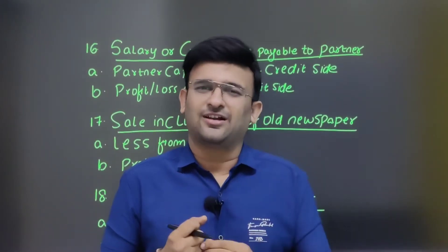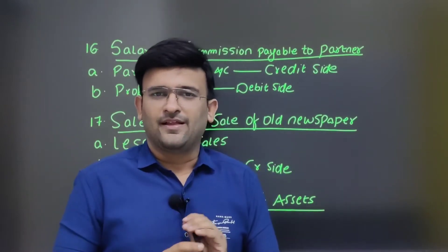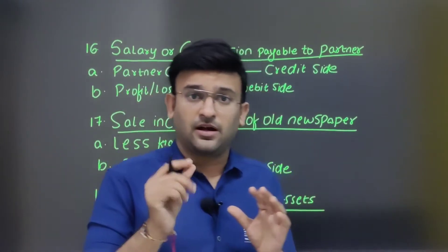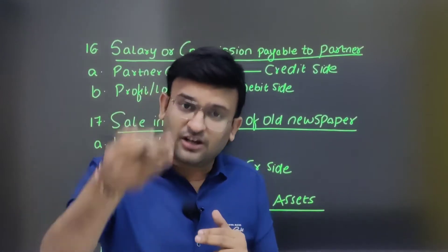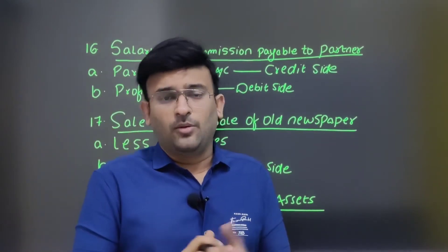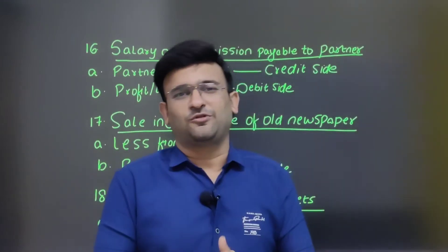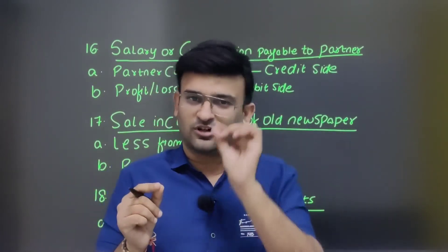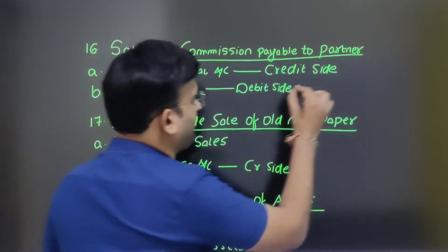Today's adjustment is a bit difficult, so please take care. Salary or commission payable to partner — the partner's capital account will get credit because he will get salary, interest on capital, and commission. All these are incomes and gains for the partner, but from the business point of view, it is an expense. So the second effect: profit and loss account, debit side.